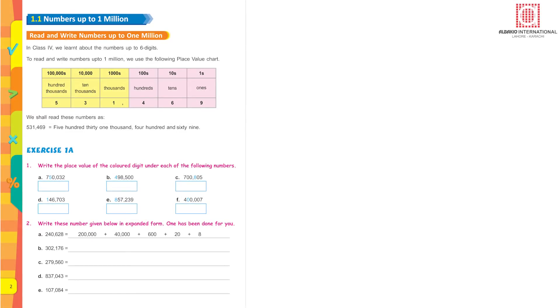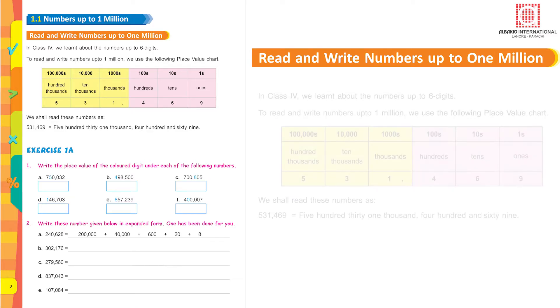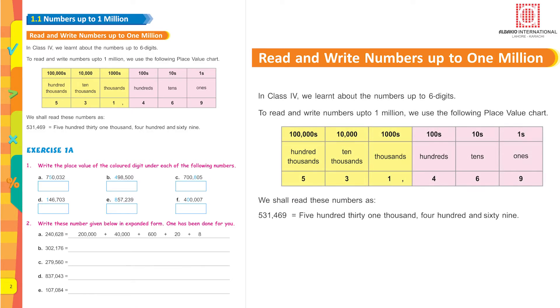First SLO is numbers up to 1 million. Read and write numbers up to 1 million in numerals and in words. In class 4 we learnt about the numbers up to 6 digits. To read and write numbers up to 1 million we use the following place value chart.